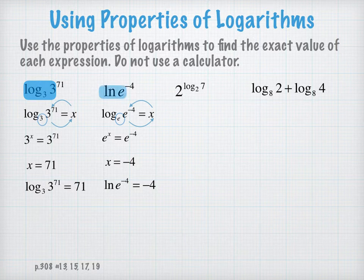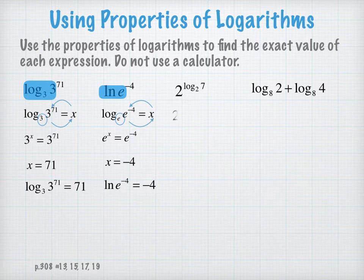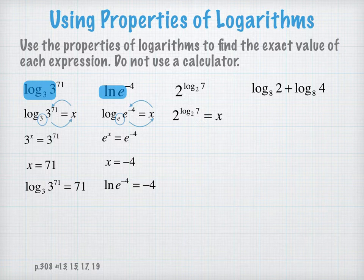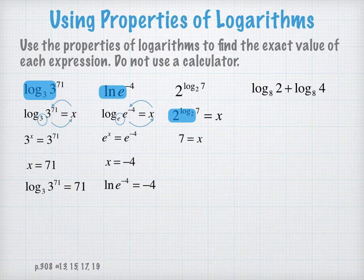And take a look at the way the expression was given to us in a way that the ln and the e kind of cancel out and you're left with negative 4. So the same thing is going to hold true when we have n raised to the power of log to the base n. This part of the expression will kind of go away and we're left with 7 equals x.